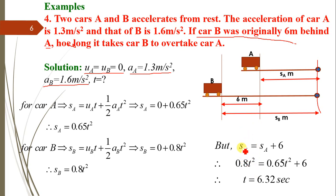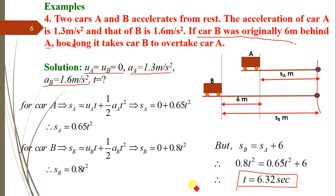Substituting: 0.8t² = 0.65t² + 6. Solving this equation gives t = 6.32 seconds. Car B will overtake car A in 6.32 seconds. This makes sense because the acceleration of car B is greater than that of car A, enabling it to catch up. The time is determined using these kinematic equations.